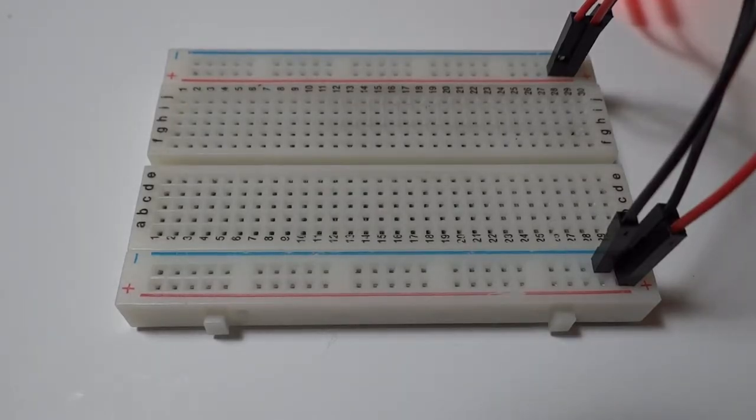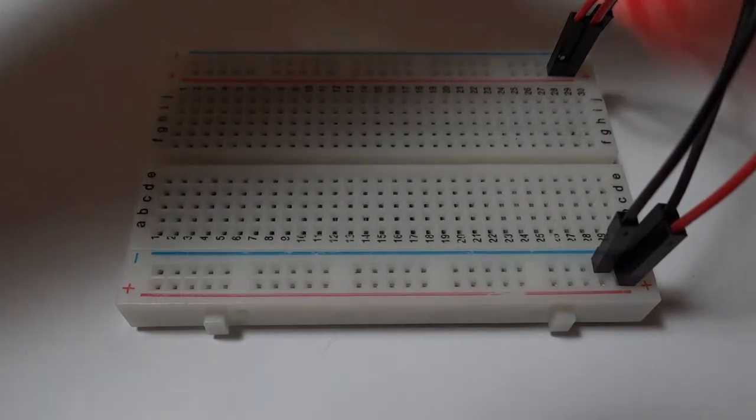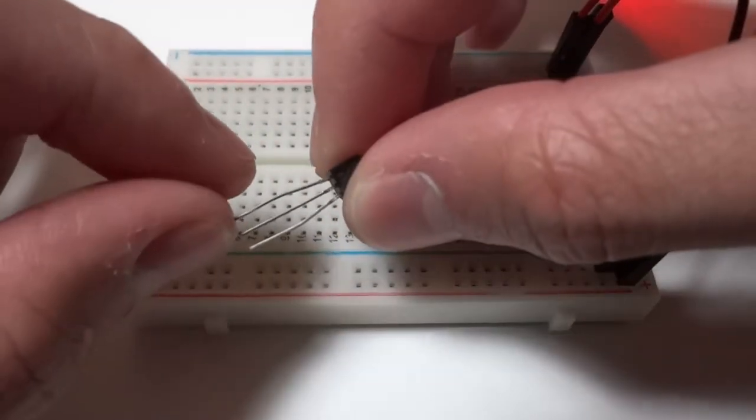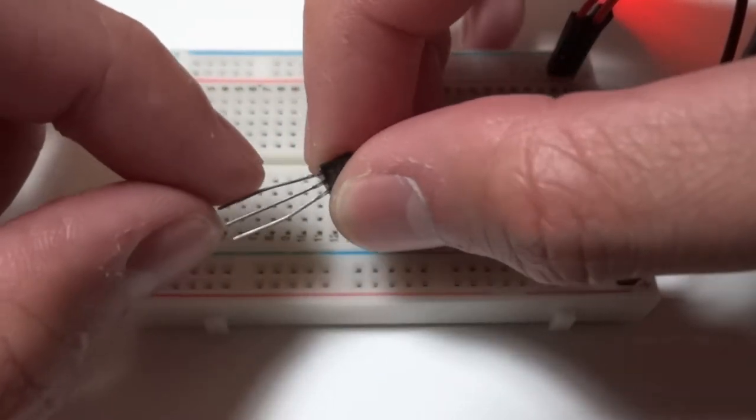Okay, so we first start by building the light detection circuit. This is the MOSFET transistor BS170. From the flat side, the top pin is the drain, the middle pin is the gate, and the bottom pin is the source.